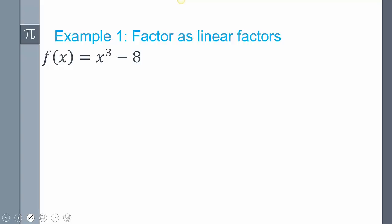We're going to write those imaginary solutions as a linear factor. In this example, x cubed minus 8, we want to use the Rational Roots Theorem. So the p's over q's, possible p's over possible q's.